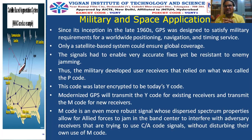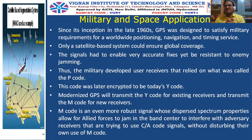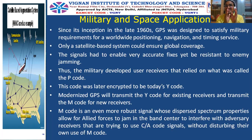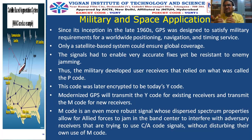If GPS is integrated with a satellite, the satellite-based system will ensure global coverage. These signals must enable very accurate fixes and resist enemy jamming. This can be achieved by using receiver antennas that nullify in some directions — whenever enemies are expected in those directions, the radiation pattern is nullified, while the actual signal direction maintains high signal strength.